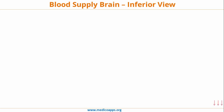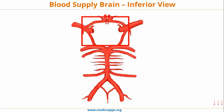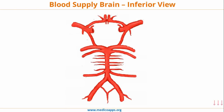Let's look at the blood supply of the brain in totality. This is the diagrammatic representation of the blood supply of the brain from an inferior view. This is the Circle of Willis. But before going into that, let's look at the arteries which comprise the Circle of Willis from a little below.